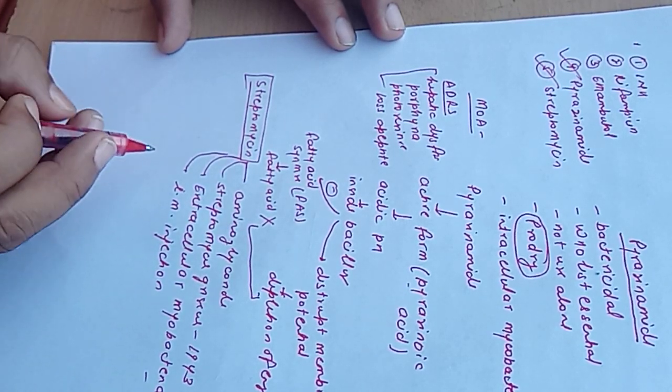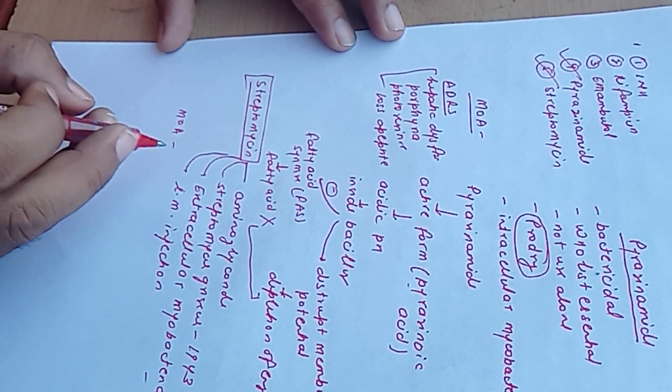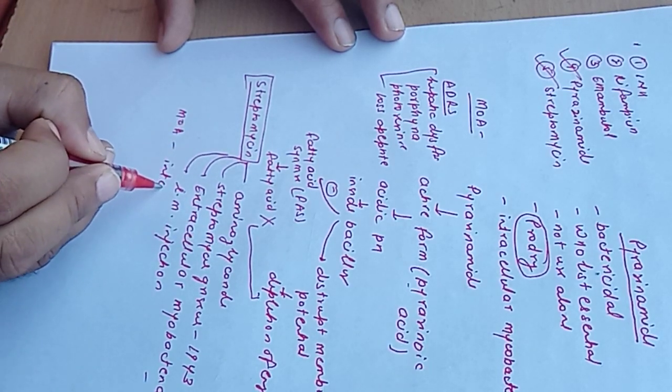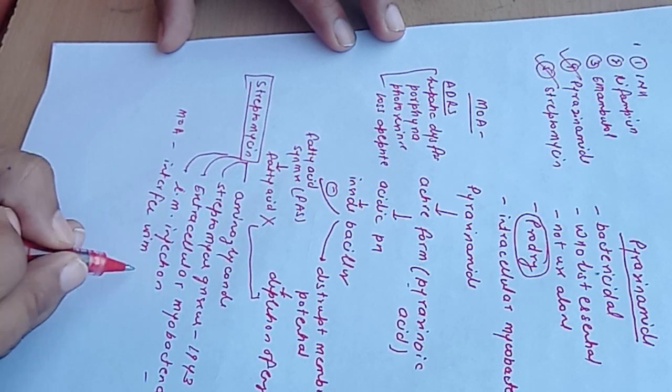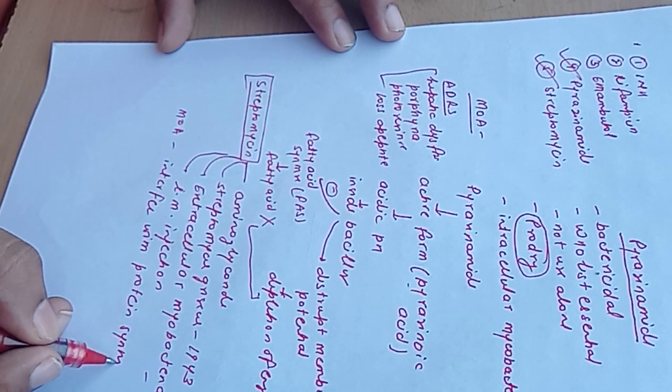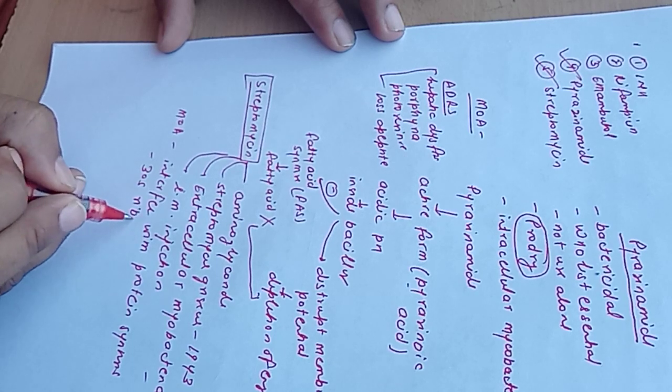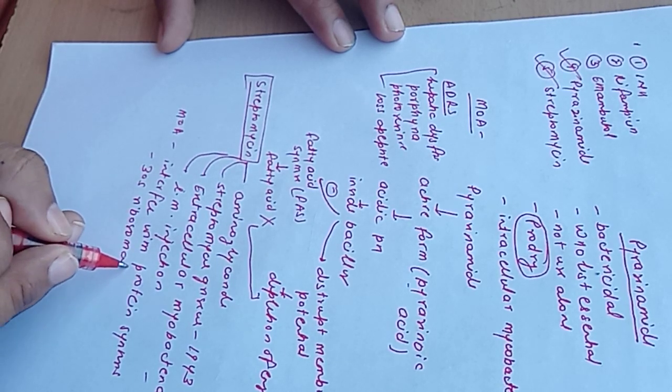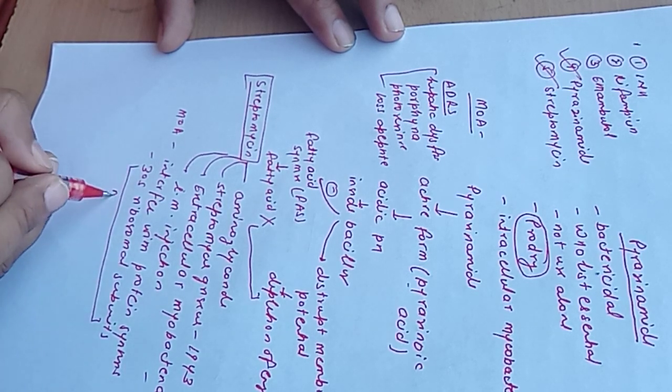Mechanism of action - as I described in aminoglycoside lectures, it interferes with protein synthesis. It interferes with the 30S ribosomal subunit and ultimately results in misreading of messenger RNA, so protein will not synthesize.